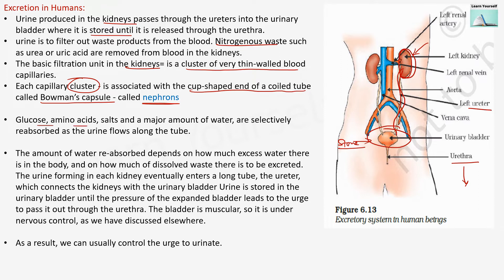Glucose, amino acids, salt, and a major amount of water are selectively reabsorbed as the urine flows along the tube. These important materials are reabsorbed into the walls as urine flows along the tube. The amount of water reabsorbed depends on how much excess water is in the body and how much dissolved waste there is to be excreted.